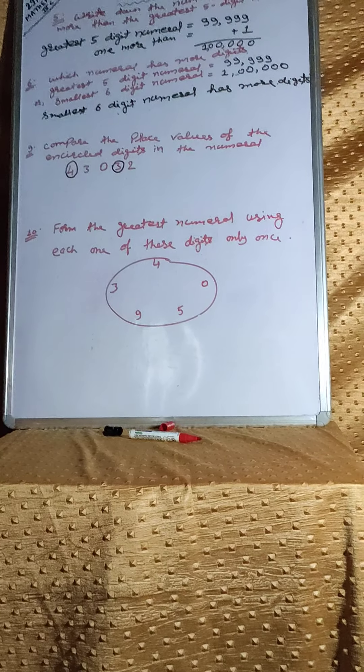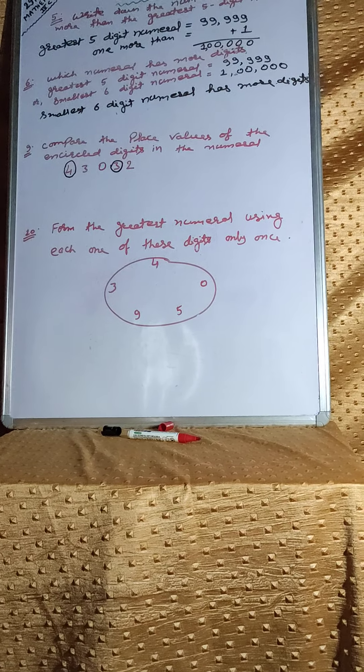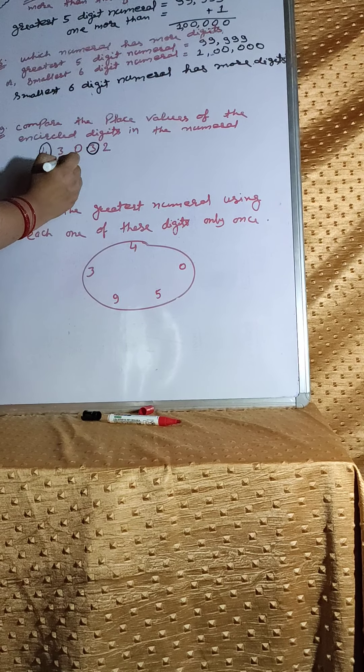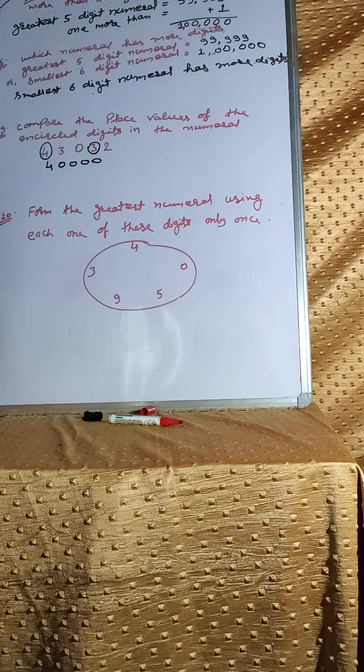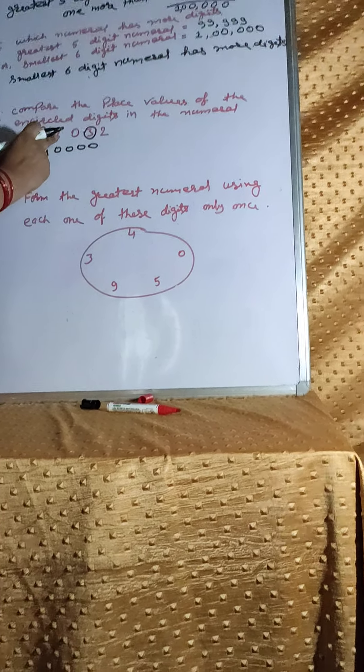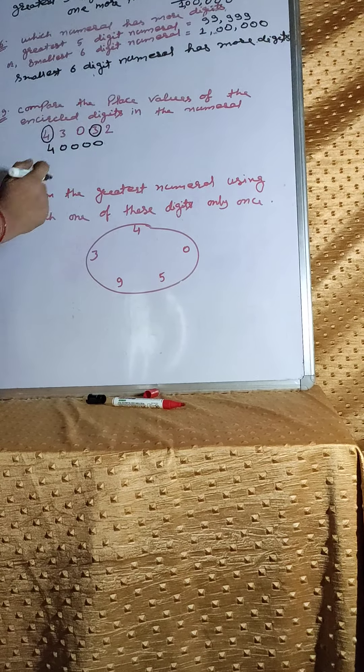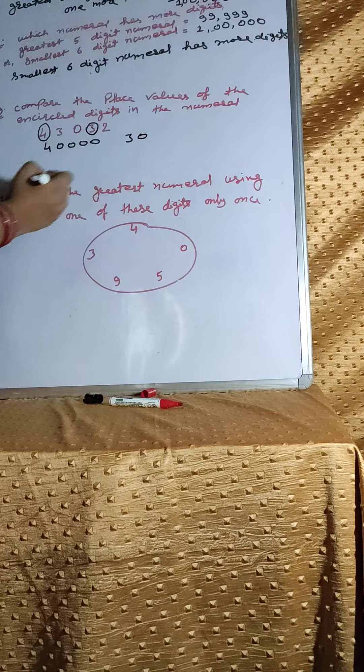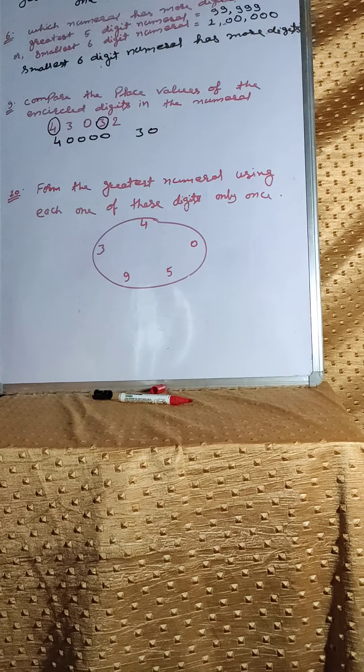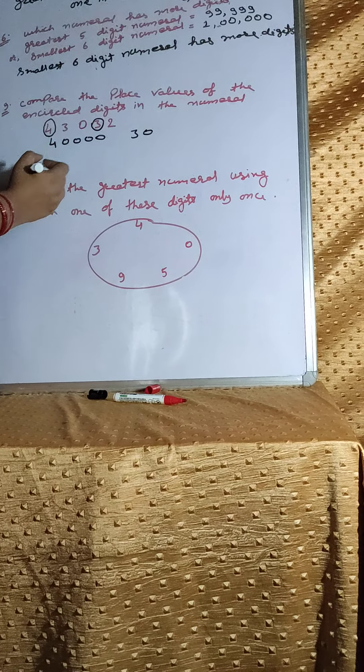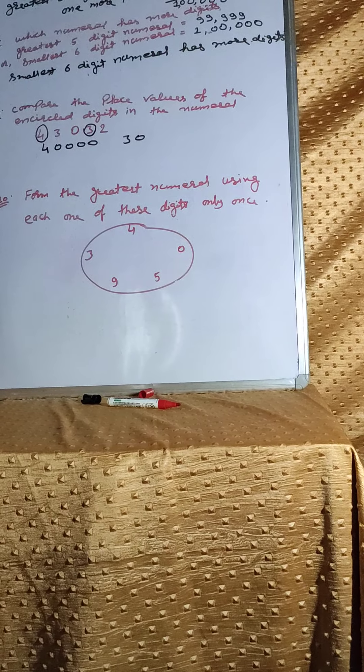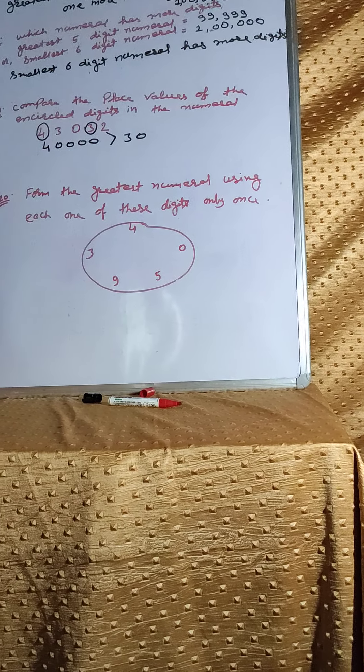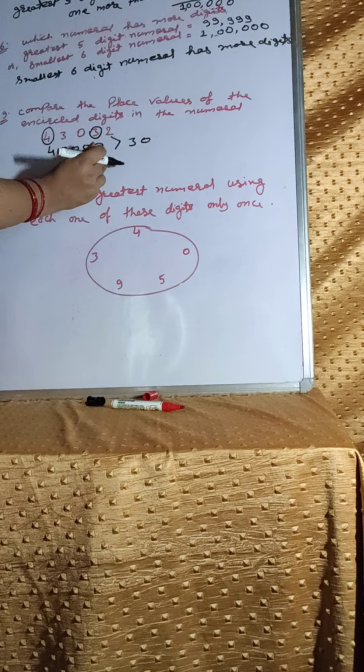Compare the place value of the encircled digit. At first, we will write the place value of this 4. We will put here 4 zeros because there are 4 digits after 4. Then after, we will write the place value of this 3, that is 30, because there is only 1 digit after 3. We will put here the greater than symbol. This means 40,000 is greater than 30.